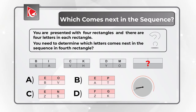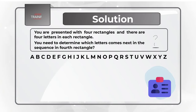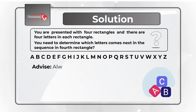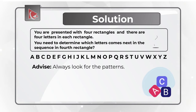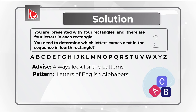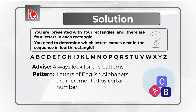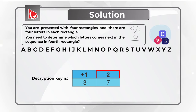To answer this question correctly, you need to know the letters of the English alphabet as well as a little bit of math — and my advice: always look for patterns. The letters of the English alphabet are incremented by a certain number, and the increment is different for each section of the rectangle. The decryption key is 1, 2, 3, and 7. Let's start with the upper left corner: the letters are B, C, D, matching the alphabet 1 to 1, so the next letter is E.